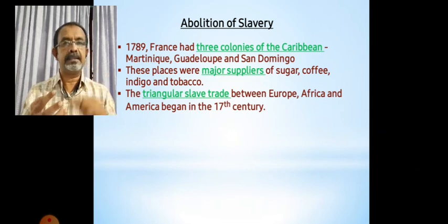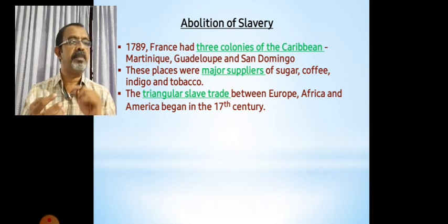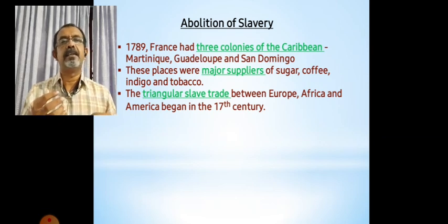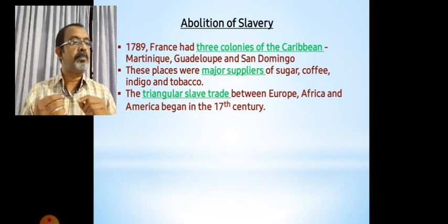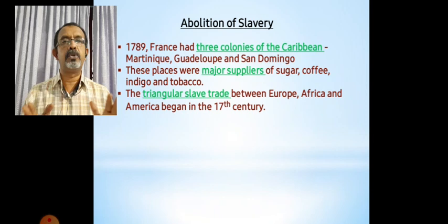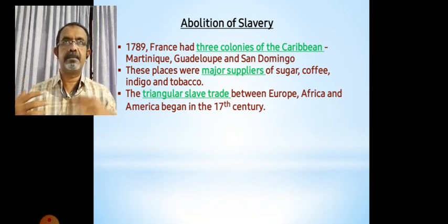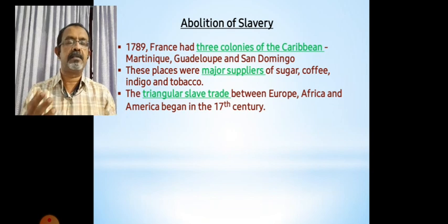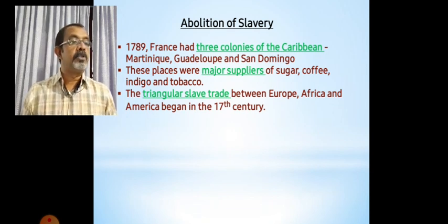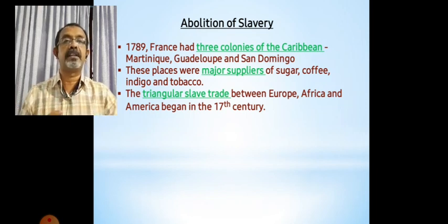Check the spelling. Nantes is spelled N-A-N-T-E-S. Bordeaux is written as B-O-R-D-E-A-U-X and is pronounced 'Bordeaux.' Bordeaux is also famous for its wines and grape yards. So port cities like Bordeaux and Nantes flourished economically because of the slave trade.